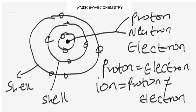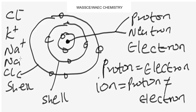Examples of charged atoms would be a chlorine ion, a potassium ion, or a sodium ion. Once you see a plus or negative sign on an element, that means it is a charged atom or an ion. Whereas when you see an element like just sodium with no charge sign on it, that is a neutral atom.